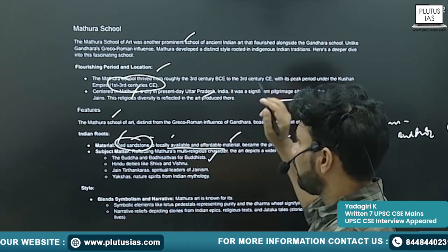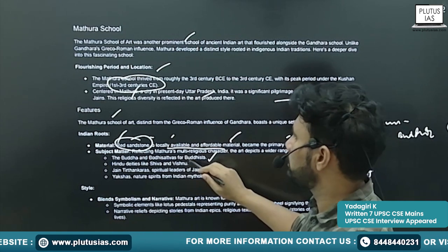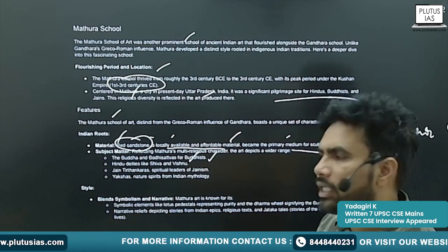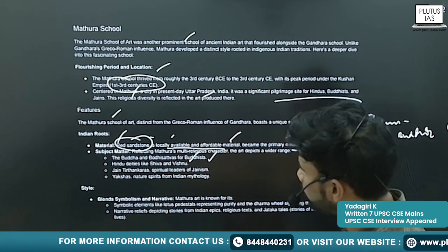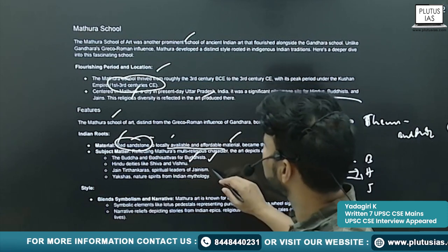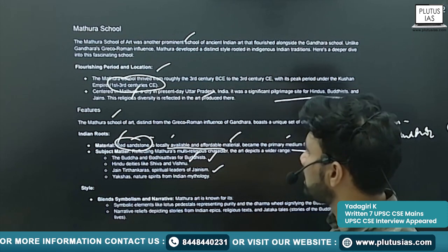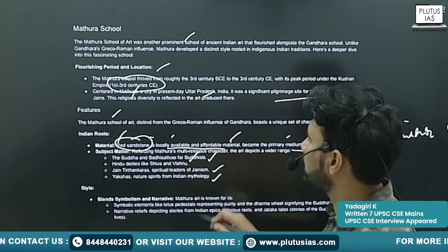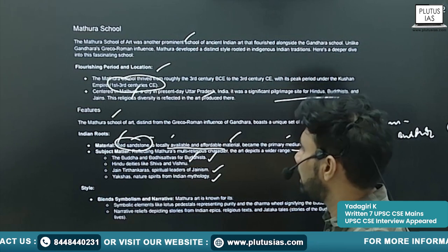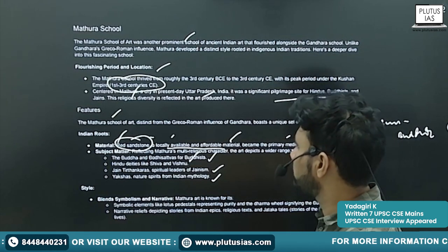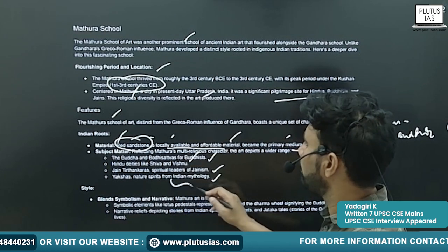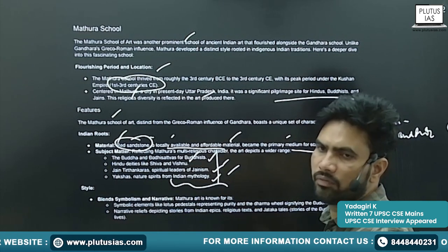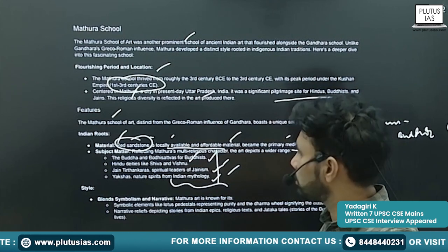Red sandstone is a locally available and affordable material that became the primary medium for sculptures and reliefs. The subject matter is taken from various sources — Buddha and Bodhisattvas for Buddhism, Hindu deities like Shiva and Vishnu for Hinduism, Jain Tirthankaras, and also Yakshas — the nature spirits from Indian mythology.